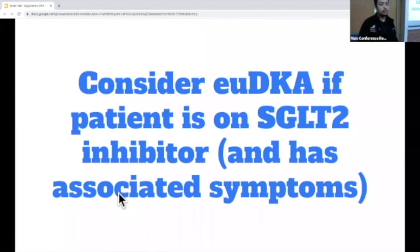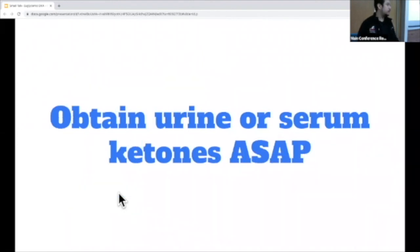Always consider euglycemic DKA in these patients. It's not necessarily always going to be the case, but it's just something to add to the differential when you're examining a patient presenting with these symptoms. Additionally, in these patients it's important to obtain urine or serum ketones — so sending that beta-hydroxybutyrate or looking at the urine ketones just to make sure that this patient is in euglycemic DKA.